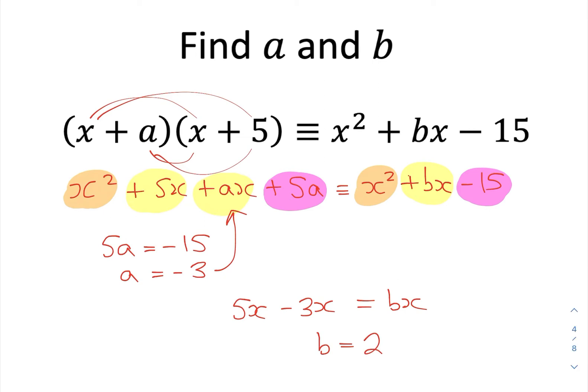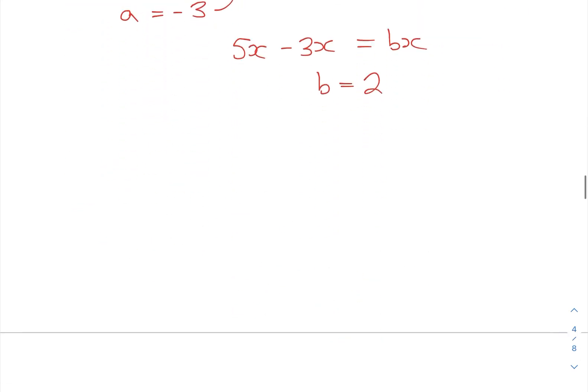Again, that's one of those questions you might have been able to spot at the start using the relationship that we know from factorizing, which is that you could spot here that these two numbers immediately have to multiply to negative 15. So you could have known that that was going to be negative 3 right from the start of the question, and then negative 3 add 5 will give you 2. If you couldn't spot that, that's fine. Just work through it. But there was a little shortcut you could have taken there.